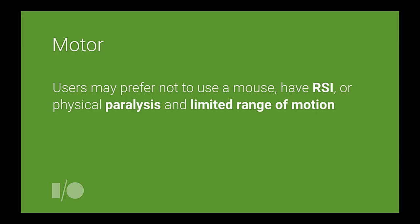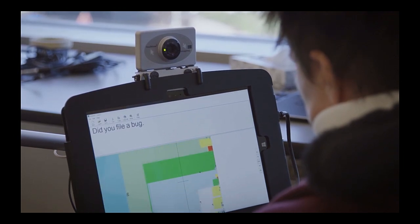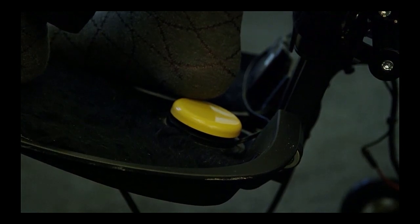Users with motor impairment span from folks with a wrist injury, broken arm, repetitive stress injury like carpal tunnel who prefer not to use a mouse, all the way to folks with physical paralysis or limited range of motion. These users may use head or eye tracking to navigate the page — this is an example of a program called Dasher, which combines with a head tracking camera to allow someone to type. These users may also use their keyboard primarily, a discrete switch device, or voice control to navigate the page.